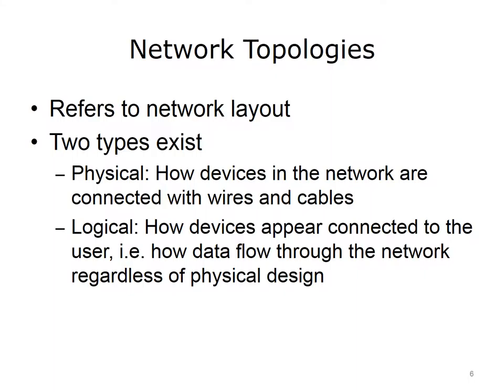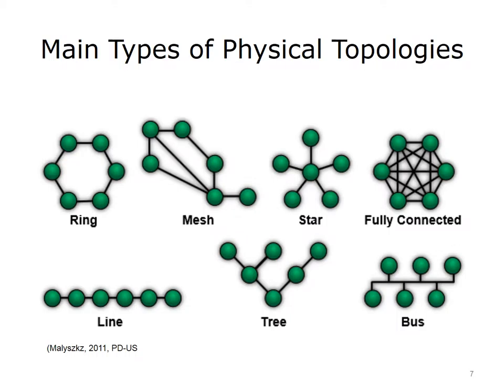How a network is organized or laid out is referred to as its topology. Two types of network topologies exist. Physical topology details how the network is physically designed — in other words, how devices in the network are connected with wires and cables. Logical topology illustrates how devices appear to the user to be connected — in other words, how data flows through the network, regardless of its physical design. First, consider physical topologies.